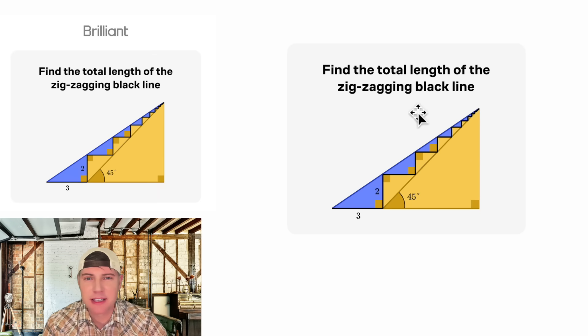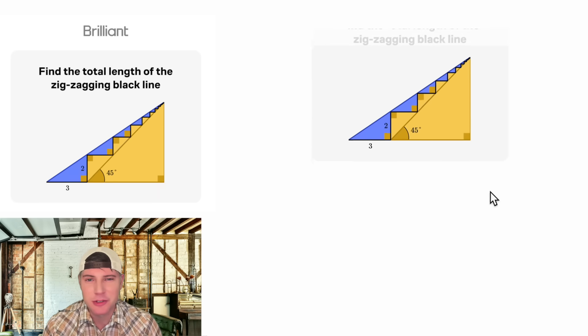It says find the total length of the zigzagging black line. So there's this black line going like this and it wants to know what is the total length. I haven't seen a problem exactly like this before so I'm kind of excited. If you want to try it on your own pause it right now because I'm going to solve it in three, two, one.